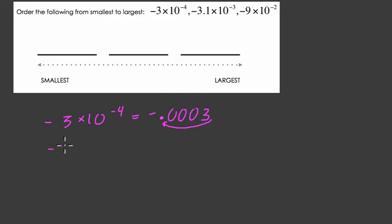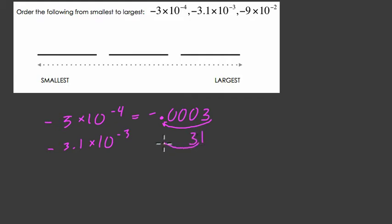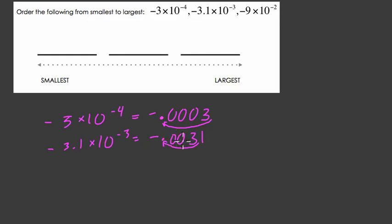Then we have negative 3.1 times 10 to the negative 3rd. Same idea — here we start at 3.1 and we divide by 10 three times. The decimal is starting between 3 and 1, and it's going to hop over three spaces, which means we're going to have two zeros. This is a negative number as well. We have two zeros this time because we started between 3 and 1 — three divisions of 10. If you count those spaces, it'll give you two zeros.